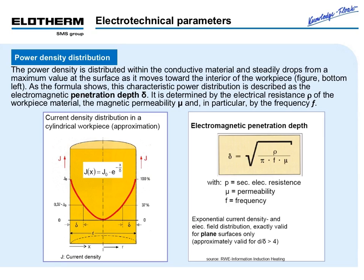Significantly involved are the electro-technical parameters. First of all, power density distribution. The power density is distributed within the conductive material and steadily drops from a maximum value at the surface as it moves toward the interior of the workpiece. This characteristic power distribution is described by the electrical resistance of the workpiece material, the magnetic permeability, and in particular by the frequency f. This electromagnetic penetration formula shows this context.